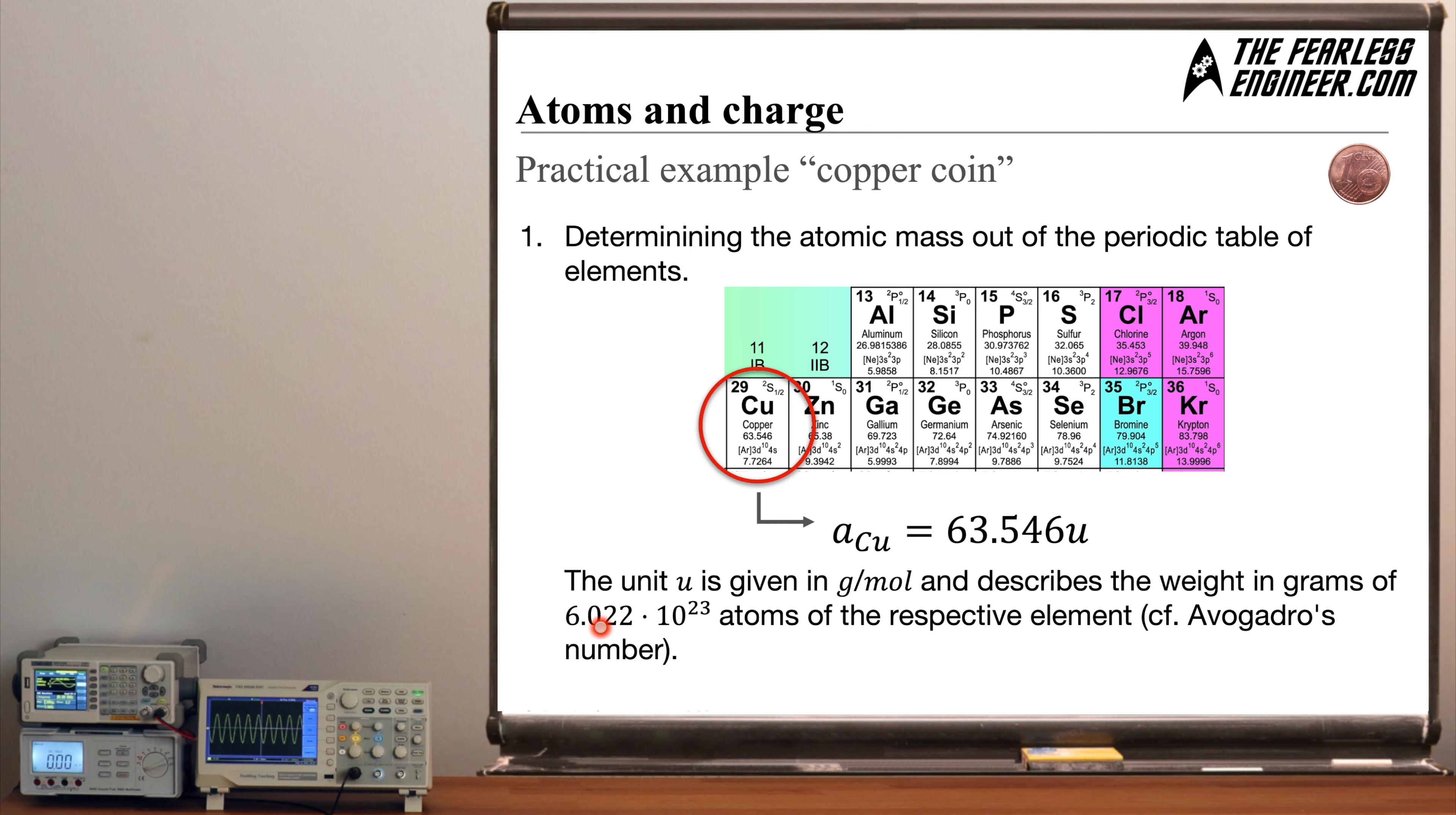What Avogadro did way back in his time is he counted the number of hydrogen atoms in one gram of hydrogen. He took one gram he counted the number and he arrived at this number here 6.022 times 10 to the power of 23. And by using this atomic weight here we can always relate to this reference element. So we know that 6.022 times 10 to the power of 23 hydrogen atoms they weigh 1 gram. And by using this number we now know that the same number of copper atoms weighs 63.546 grams. So copper is 63.546 times heavier than hydrogen.